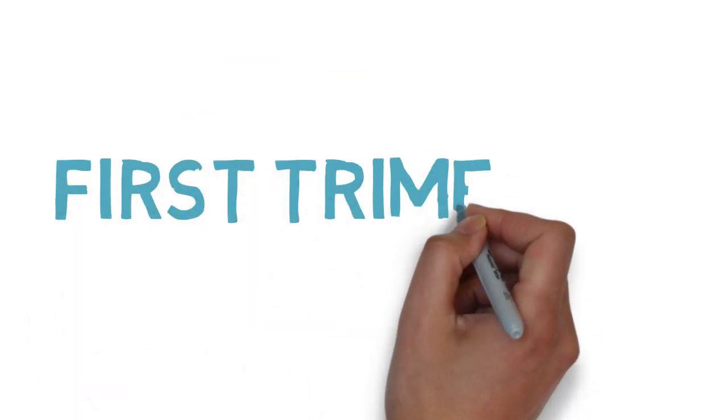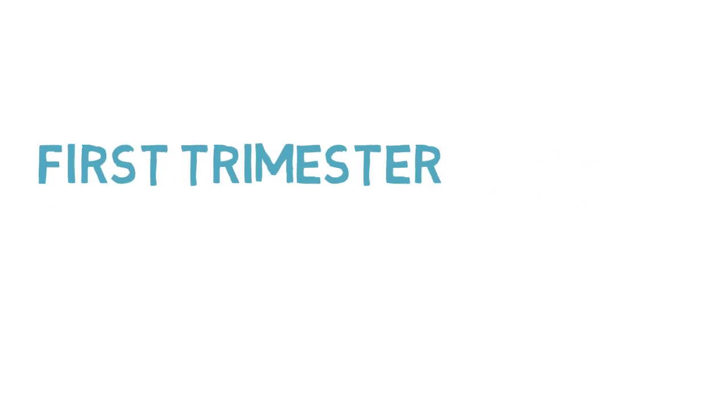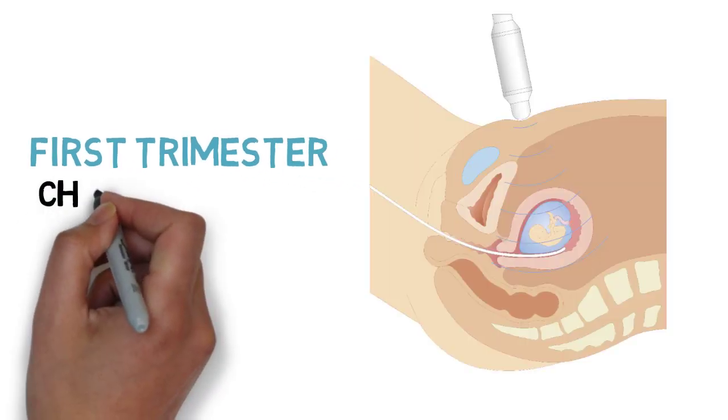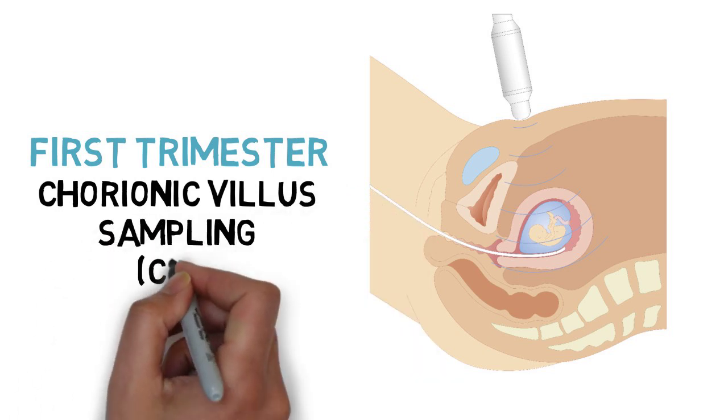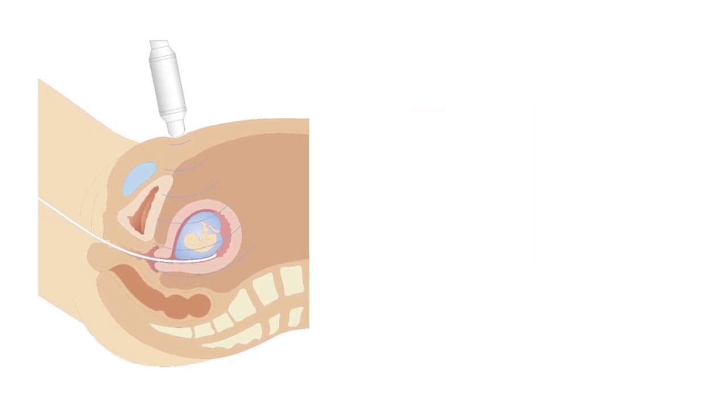In the first trimester, the available invasive procedure is called a chorionic villus sampling, or CVS. This is a sampling of the chorionic villi, a type of placental tissue, usually done between 10 to 14 weeks gestation.